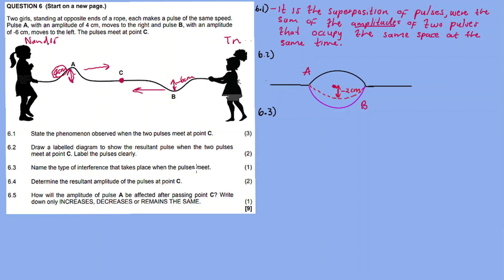Like 6.1 is superposition, right? But there's two types of interference - constructive and destructive interference. Now here we have destructive interference. We have a negative amplitude, right?